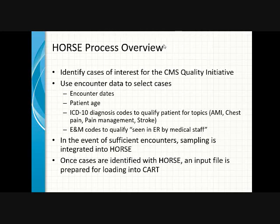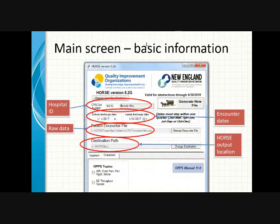The next screen is going to be a little busy, but bear with me — it's the only basic screen that HORSE has. On that screen we have the hospital ID, which is your CMS certification number, something that identifies your hospital. We have the encounter dates, which gives us the date range for the abstractions. It has to be within a quarter or within a month — we don't sample partial months or partial quarters; it's either a full quarter or a full month. The raw data points to the data from your billing file, and the destination is where HORSE will put the output.